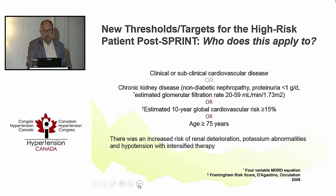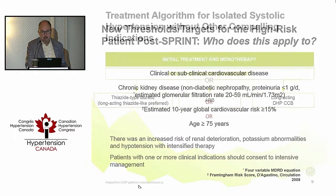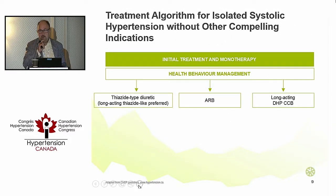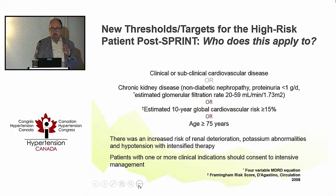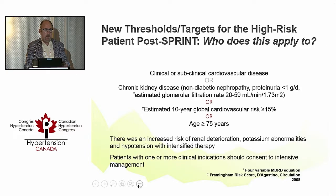Dr. Rabi pointed out that the lower target does come with a cost: renal deterioration, potassium abnormalities, and more risk of hypotension. On the choices — how many people would start her on a long-acting diuretic? A calcium channel blocker? A RAS inhibitor? A beta blocker? A single pill combination?